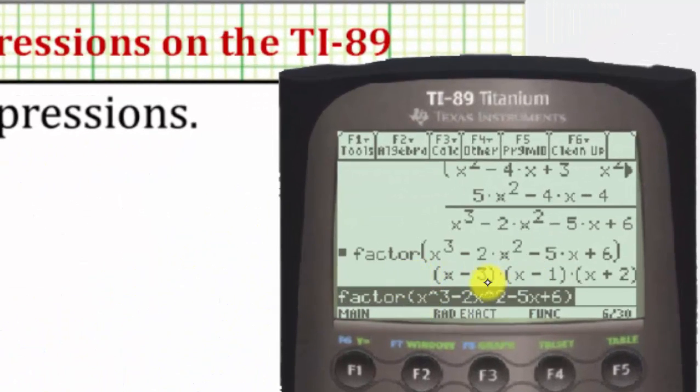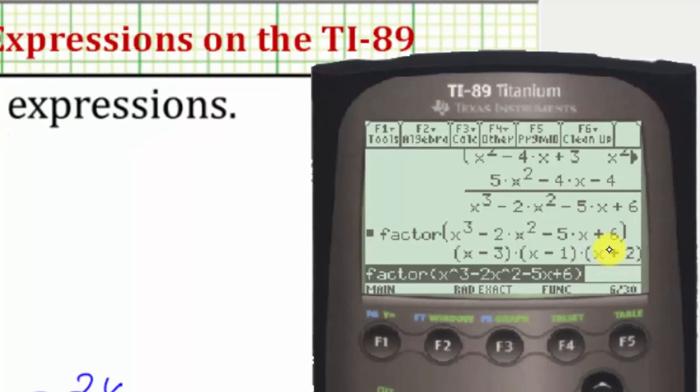So the denominator in factored form is these three binomial factors. The quantity x minus three times the quantity x minus one times the quantity x plus two.